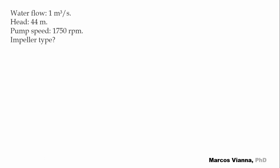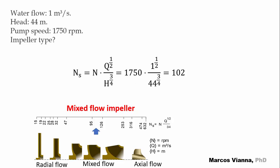Now a third one. Consider the case in which the water flow is 1 cubic meter per second, the head is 44 meters, and the pump speed is 1750 RPM. What will be the impeller type? Here is the specific speed formula. We substitute the values and find 102. It's a mixed flow impeller.